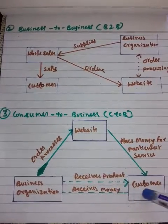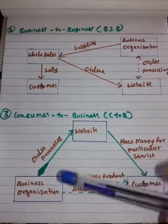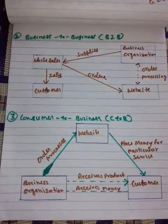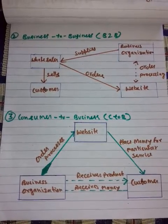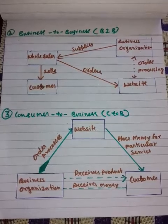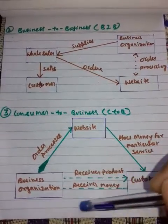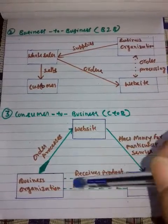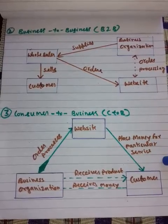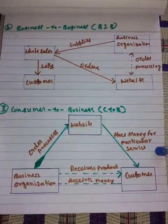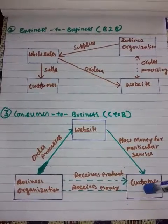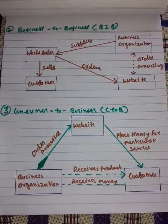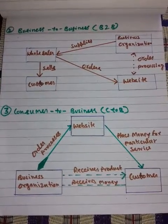Customers can get the price through this process. Customers review the bids and select the company that meets their price expectation. This is the Customer to Business system.